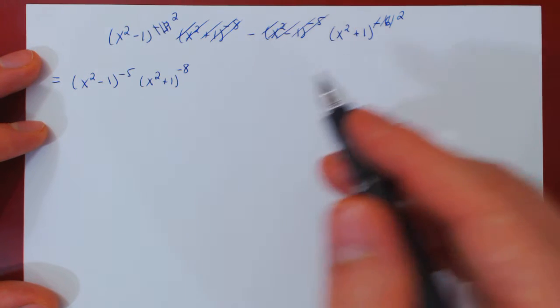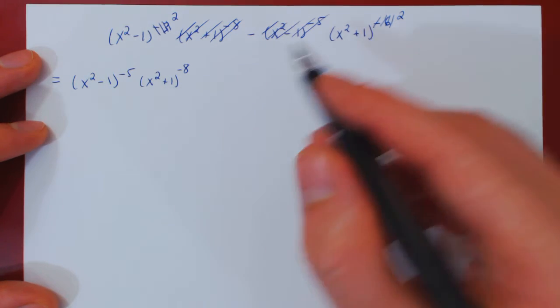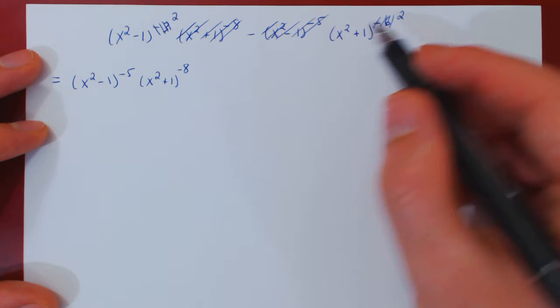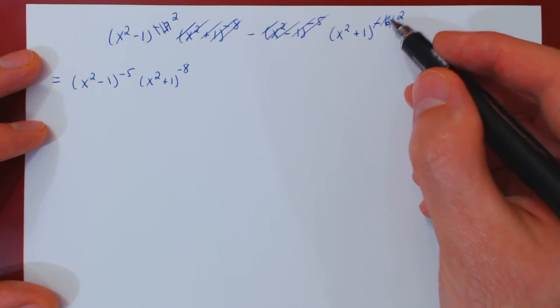And again, you can verify. If you multiply x squared plus 1 to the negative 8 times x squared plus 1 squared, you add up the exponents, and negative 8 plus 2 is negative 6.